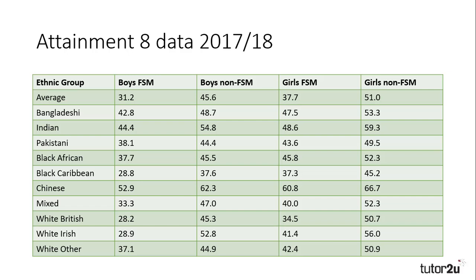Moving across to girls, there is a similar gap between those on free school meals and those not, with girls on free school meals achieving 37.7 points. The average gap between these two groups is 14 points, which across eight GCSEs is nearly equivalent to 2 grades on each GCSE. This really highlights the impact of material factors on educational achievement, and this gap is present for all ethnicities and both genders.